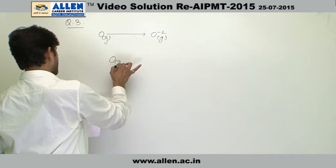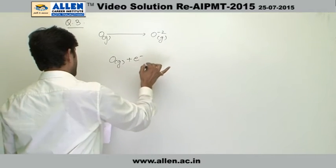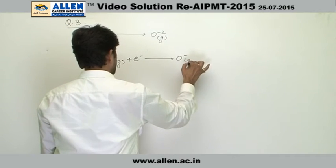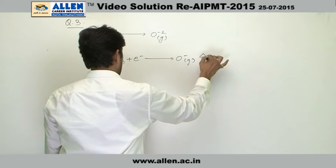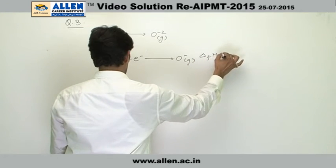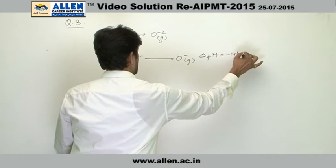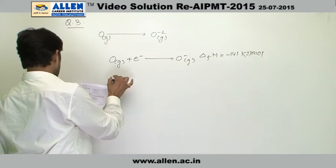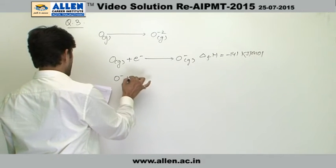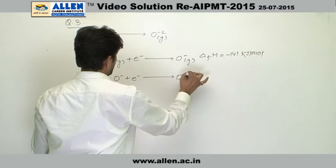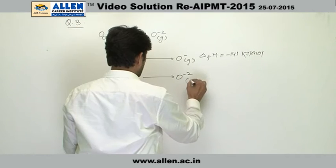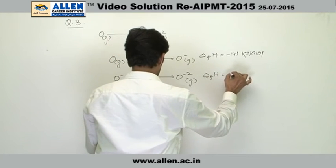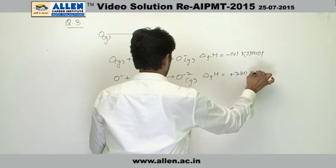If we look at them in the first step, the first electron is gained, oxygen becomes O negative gaseous. Delta H formation, delta enthalpy formation is minus 141 kilojoule per mole. And the second step is O negative plus electron getting converted into O two negative. It is also gaseous. Delta H equals to plus 780 kilojoule per mole.